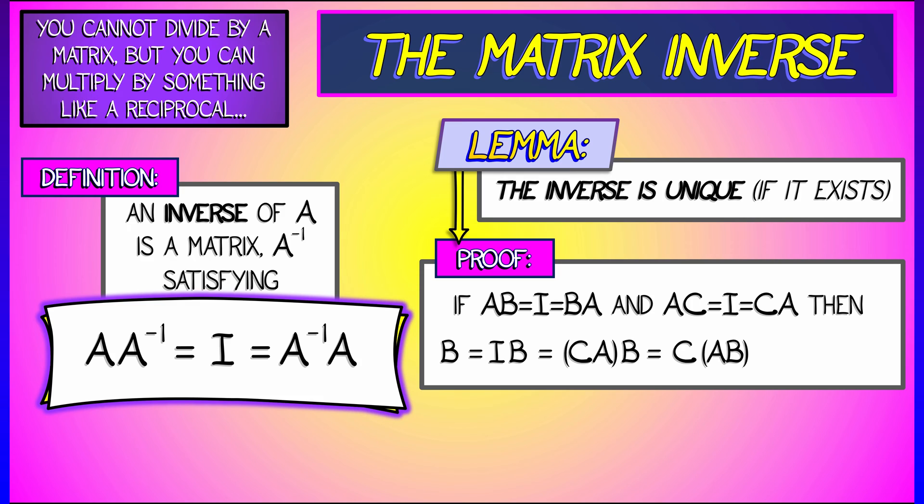I'm going to write C times A times B as C times A times B. And then I'm going to use the fact that B is an inverse to A to say that A times B is the identity, C times the identity is C. You chain all of those together, and you get that B is equal to C.